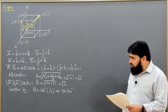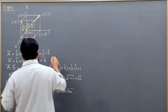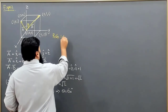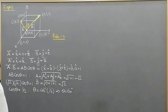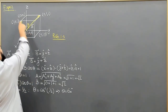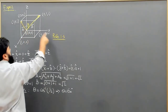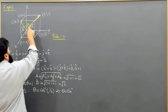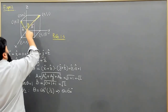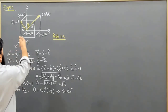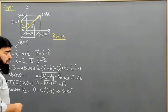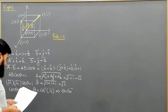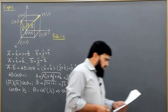Now there is Problem 1.3: find the angle between the body diagonals of a cube. The body diagonals do not go through the faces but through the body of the cube — for example, from one corner to the opposite corner. We calculate the coordinates of these diagonals, apply the same procedure, and find the angle. I hope you will practice this one.